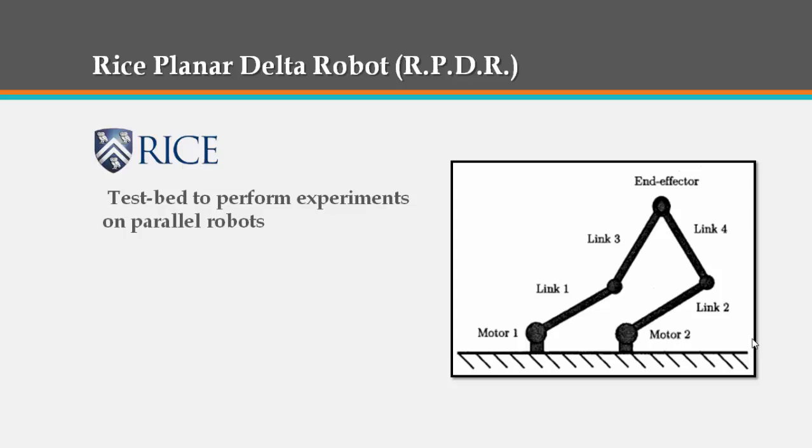As an example, the Rice Planner Delta robot is a 5-bar linkage designed and built at Rice University as a testbed to perform experiments on parallel robots. It has basically four links connected through revolute joints. Two of these links are actuated with DC motors while the other two links are just passive links.